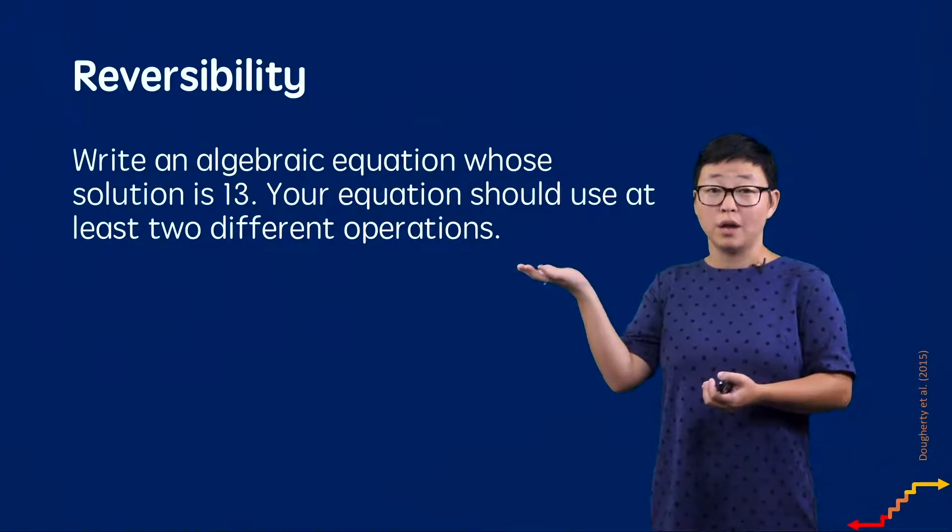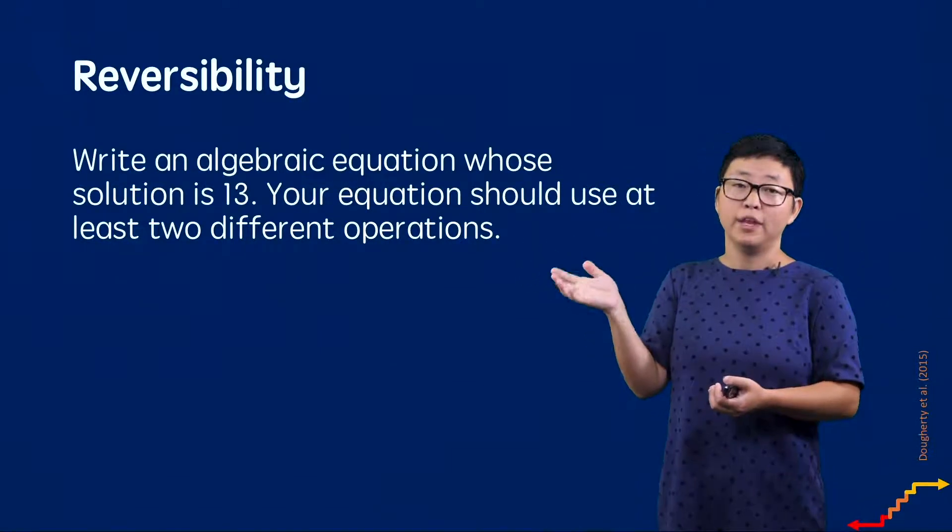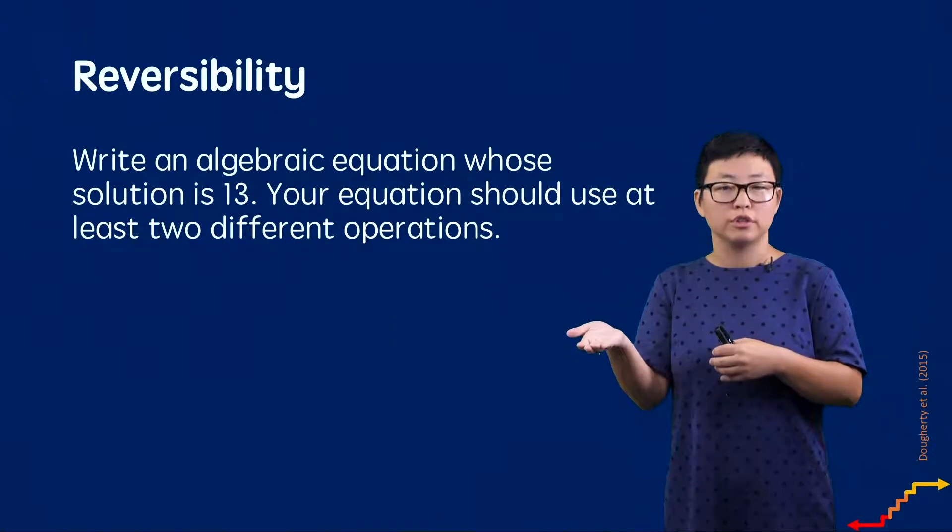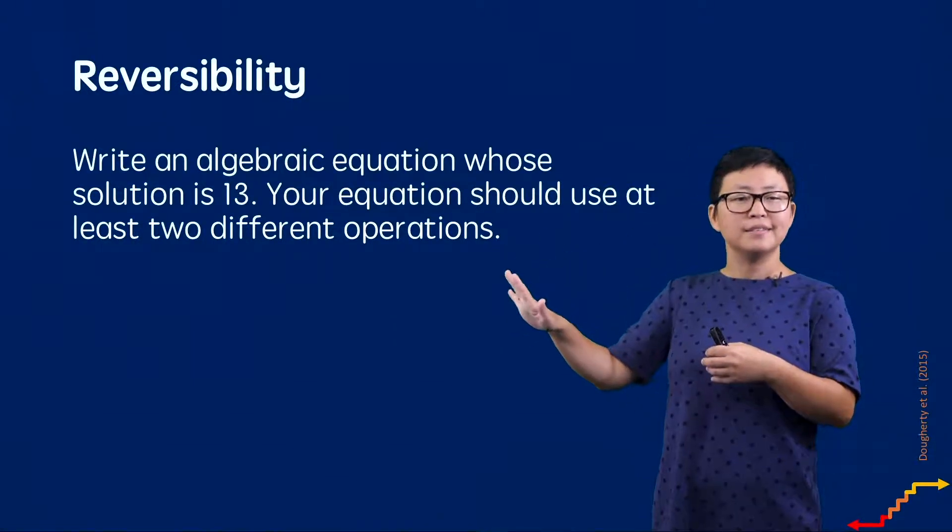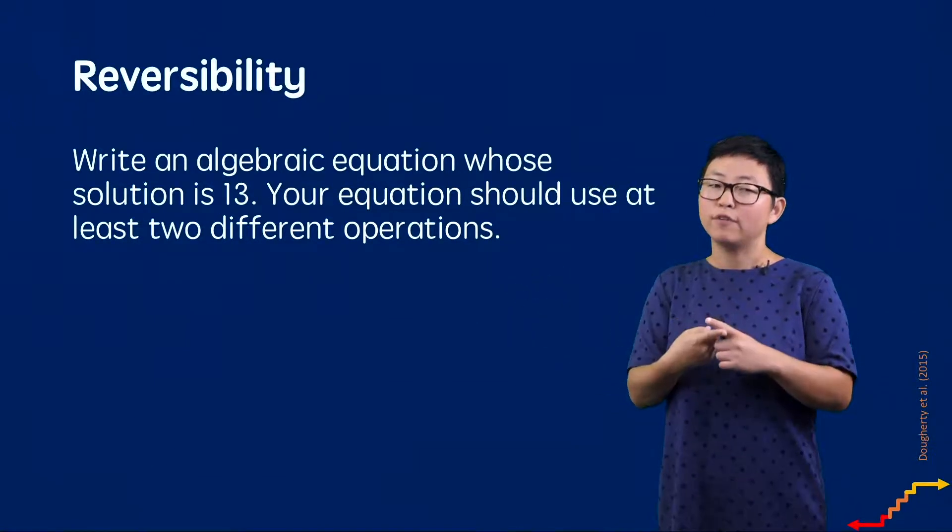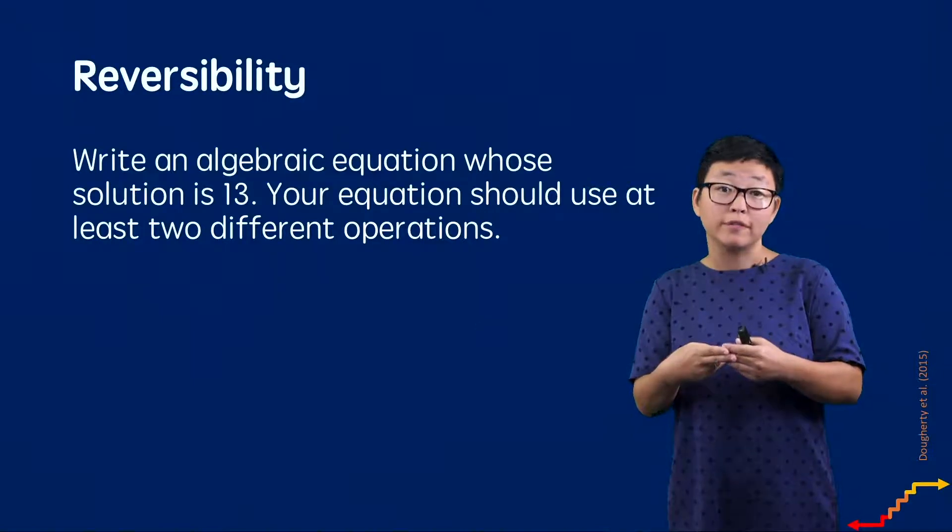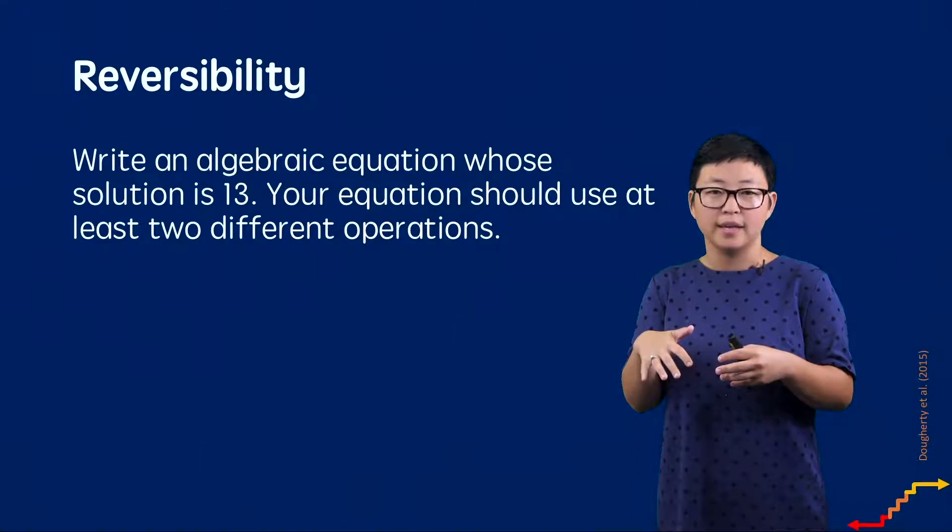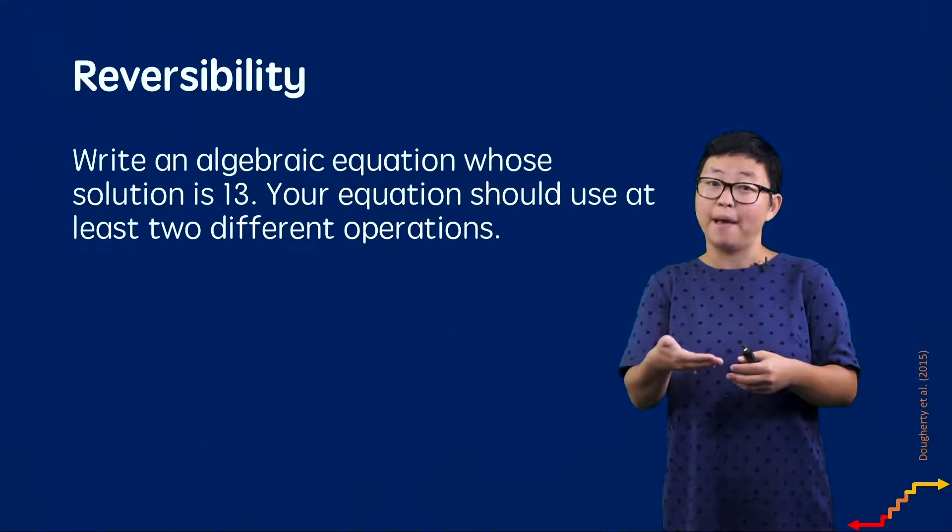So instead of giving a student a problem to solve and then hoping that they get the answer 13, you're reversing it and giving them the answer 13, and then you're additionally setting some parameters or boundaries about what that work is going to look like. So you're asking for an equation and you're asking for two different operations. As you can imagine, students are going to come at this problem in all kinds of different ways and hopefully ways that make sense to them.